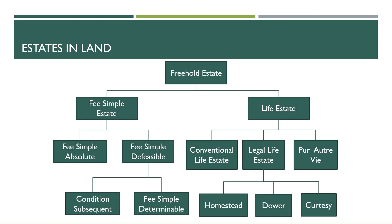In a previous video, we covered fee simple. So in this one, we're only going to cover life estate. Just as a recap, life estate is a type of freehold estate, and the freehold estate is a type of estate in land. With estate in land, we have freehold and leasehold. Freehold is ownership; leasehold is rentals. Under freehold, which is ownership, we have fee simple estate, and in this video we're going to talk about life estate and the types of life estate.